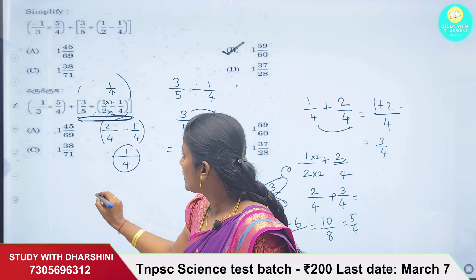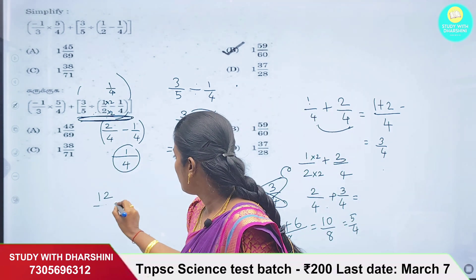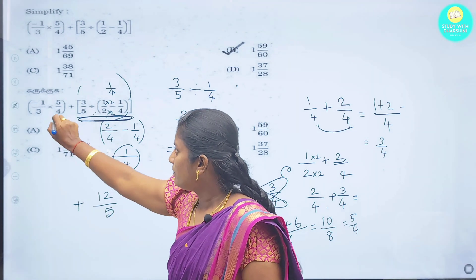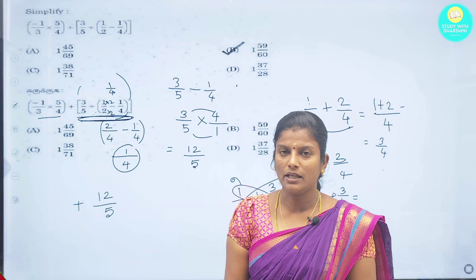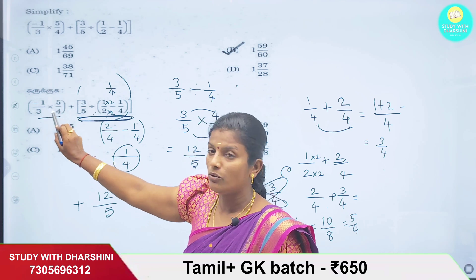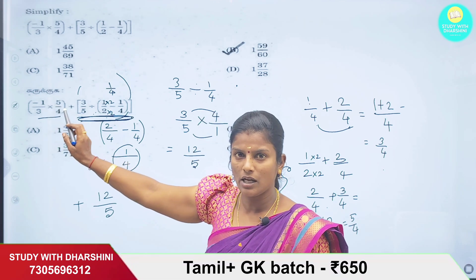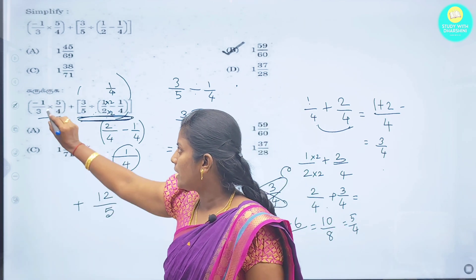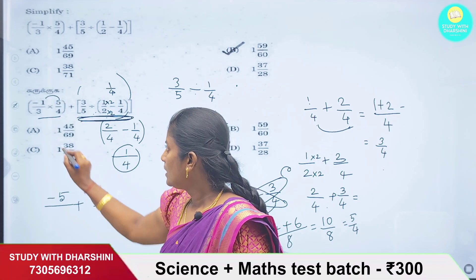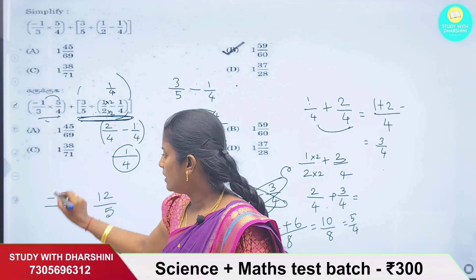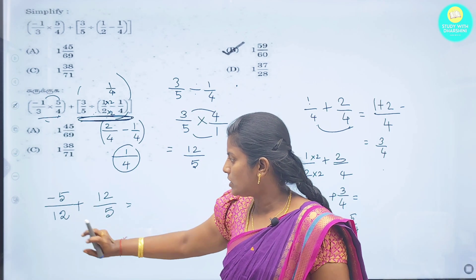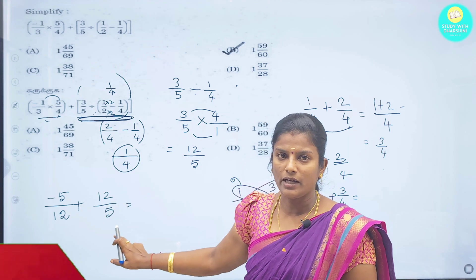So here, we have 12 divided by 5, plus the first bracket. What is the first bracket? Minus 1/3 cross 5/4 — there is a multiplication. The same denominator is not required, so direct multiplication: minus 1 into 5 is minus 5, and 3 fours are 12. So we have minus 5 by 12 plus 12 by 5.